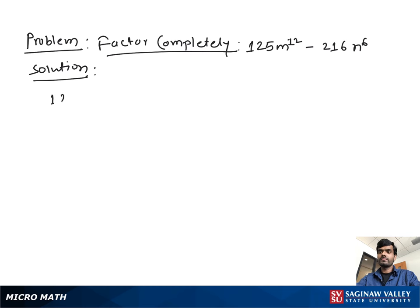Factor completely: 125m¹² minus 216n⁶. If we see, we don't have any common factor.